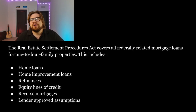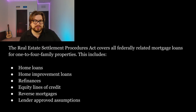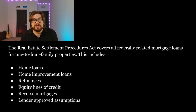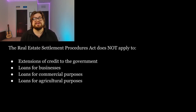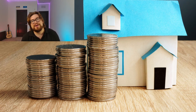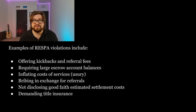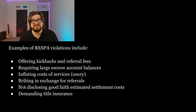RESPA covers all federally related mortgage loans for one to four family properties. A federally related mortgage loan is a loan for a residential property insured by the government, including home loans, home improvement loans, refinances, equity lines of credit, reverse mortgages, and lender-approved assumptions. Loans that RESPA does not apply to include extensions of credit from the government, loans for businesses, loans for commercial purposes, and loans for agricultural purposes. RESPA prohibits predatory lending tactics, and examples of RESPA violations include offering kickbacks and referral fees, requiring large escrow account balances, inflating costs of services, bribing in exchange for referrals, not disclosing good faith estimated settlement costs, and demanding title insurance.